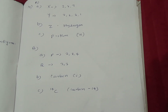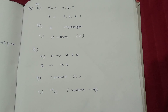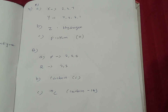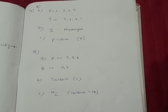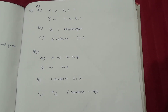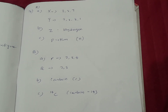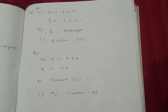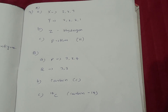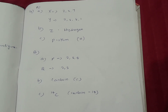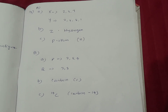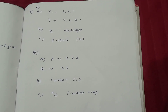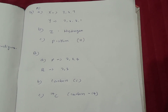Question number 18: A — X: 287, Y: 288-1; B — Z: Hydrogen. C — Proton H-1; B — A: P: 284, Q: 23; B — Carbon. C — Carbon-14.